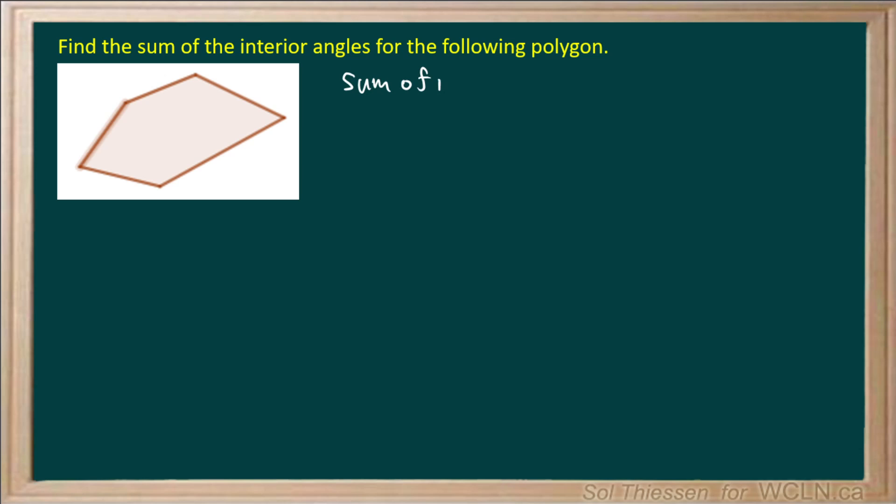that the sum of interior angles of a polygon is equal to n minus 2 times 180 degrees.